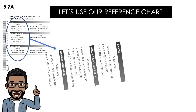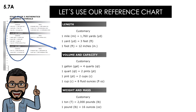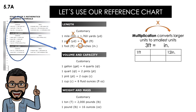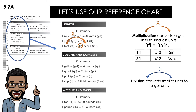It's going to be exactly the same as the previous lesson. Whenever we're multiplying, we use it to convert larger units to smaller units. For example, three feet is equal to how many inches? I go to my reference chart and find that one foot is equal to 12 inches, so I multiply by 12. Three feet times 12 is equal to 36 inches. Easy peasy!